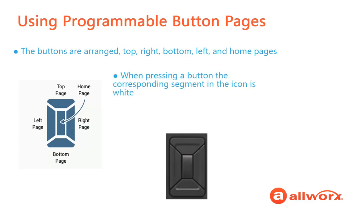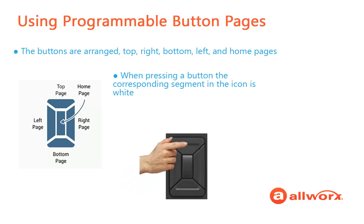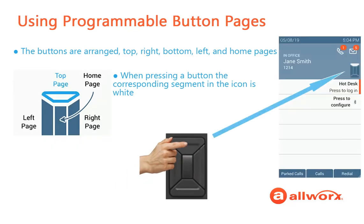When pressing a navigation pad button, the corresponding segment in the idle screen icon turns white. For instance, when the top five-way navigation pad button is pressed, the top programmable button page is displayed and the corresponding segment in the icon is white. For this example, buttons for the top page have already been configured.